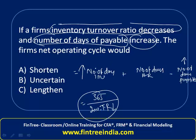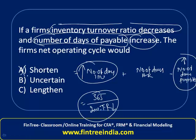Now look carefully — the number we add (days in inventory) has increased and the number we subtract (days in payables) has also increased. These effects are in two opposite directions, and since we do not know the quantum, the answer is neither shortened nor lengthened — the answer would be uncertain.